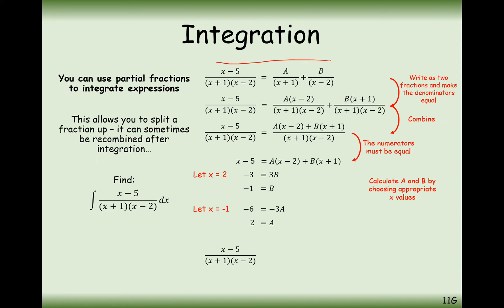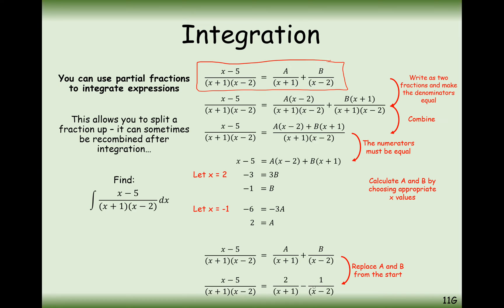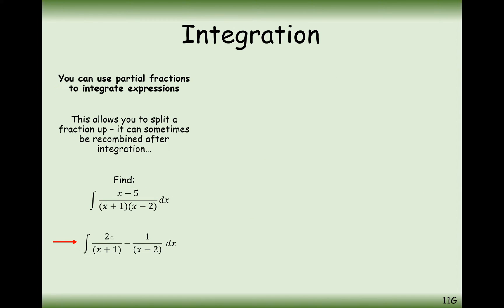Going back to our starting expression, the way we've split it up is 2 over (x plus 1) minus 1 over (x minus 2). Now if we want to integrate this, we can always integrate something that's equivalent. For doing these we're going to use the ln rules — we're looking for the tops of the fractions to be the differential of the bottom of the fraction.